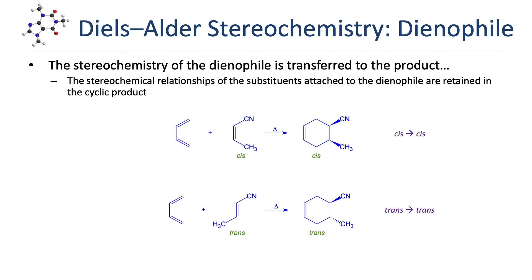In a previous lesson, we learned that pericyclic reactions are stereospecific. In a Diels-Alder reaction, any stereochemistry in the diene or dienophile will influence the spatial arrangements of the substituents in the final product. The dienophile is usually an alkene, and the stereochemical relationship of any substituents directly attached to the double bond is simply transferred to the product. In the first reaction, 1,3-butadiene reacts with a cis-disubstituted alkene to give a cis-disubstituted cyclohexene ring. In the second reaction, 1,3-butadiene reacts with a trans-disubstituted alkene, and the trans-stereochemical relationship is maintained in the product, giving a trans-disubstituted ring.